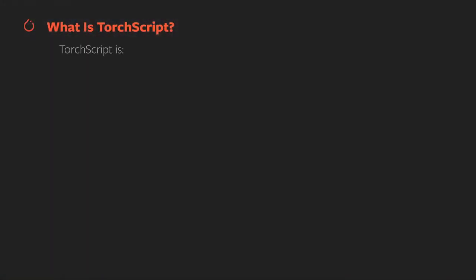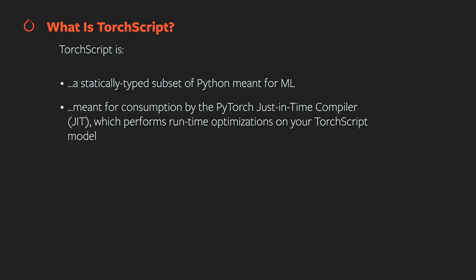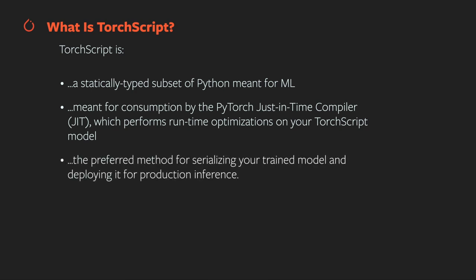So what is TorchScript? It's a statically-typed subset of Python for representing PyTorch models, and it's meant to be consumed by the JIT — the PyTorch just-in-time compiler — which performs runtime optimizations to improve the performance of your model. It also allows you to save your model and weights in a single file and load them as a script module object that you can call just as you would your original model.